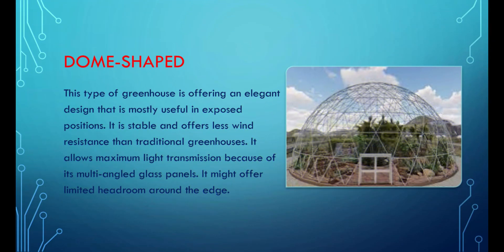The dome-shaped greenhouse offers an elegant design that is mostly useful in exposed positions. It is stable and offers less wind resistance than traditional greenhouses. It allows maximum light transmission because of its multi-angled glass panels, though it might offer limited headroom around the edge.